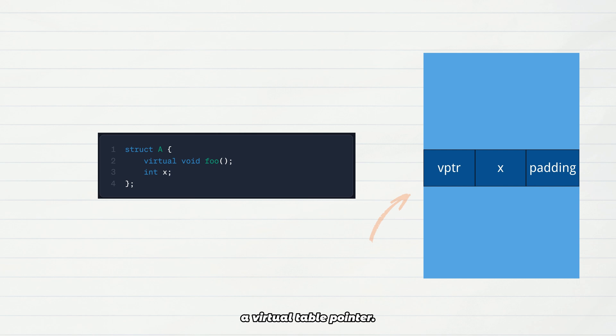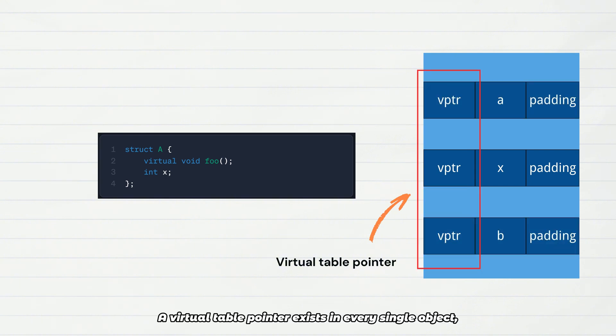The memory layout now looks like what's shown on the screen. Here we must clarify three easily confused key points: A virtual table pointer exists in every single object, not as a shared class-level resource. If you create 10 instances of A, you get 10 distinct virtual table pointers.